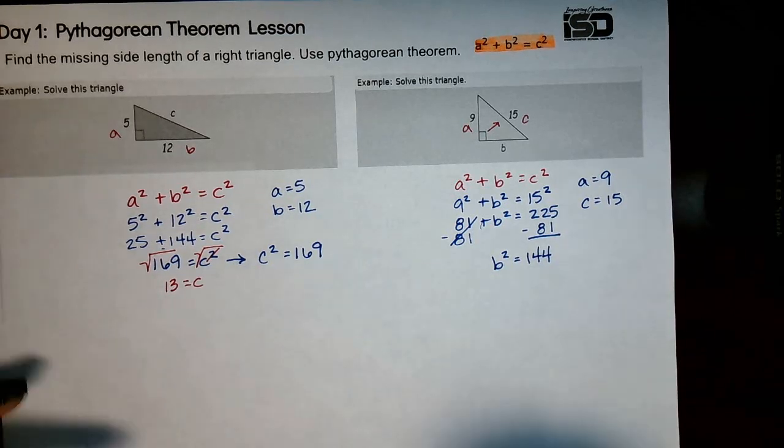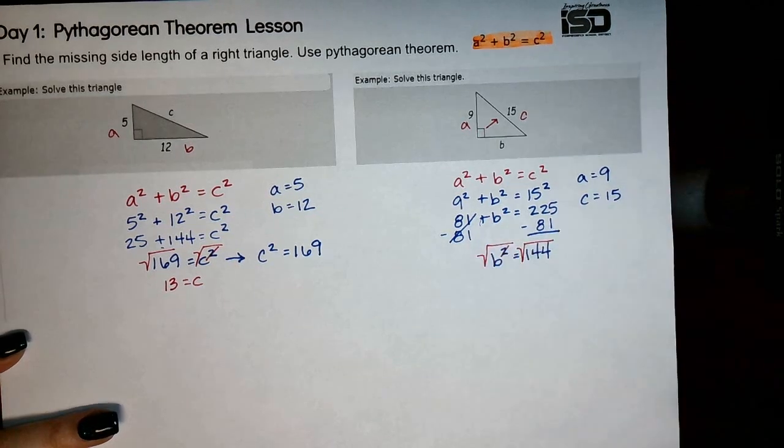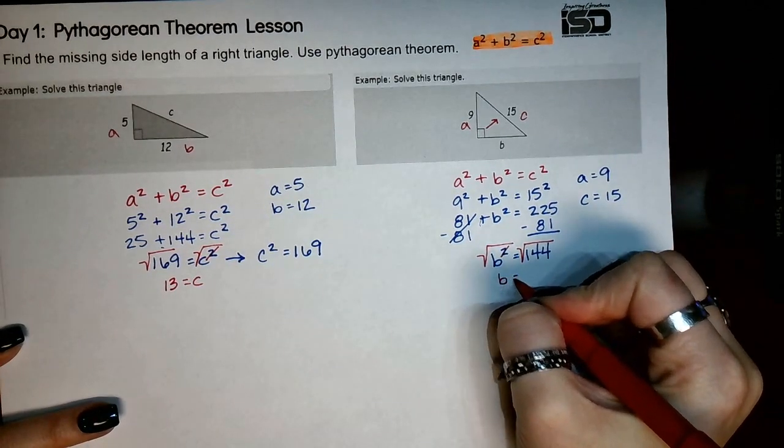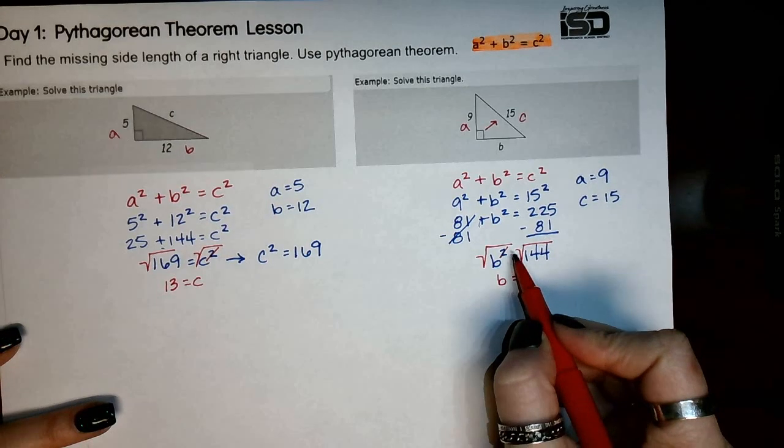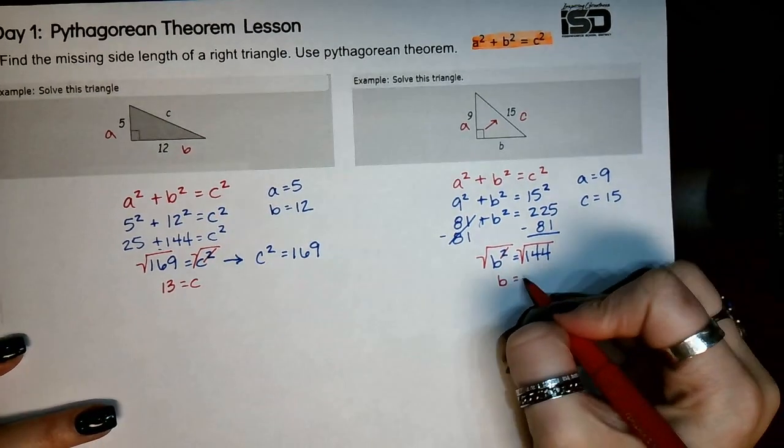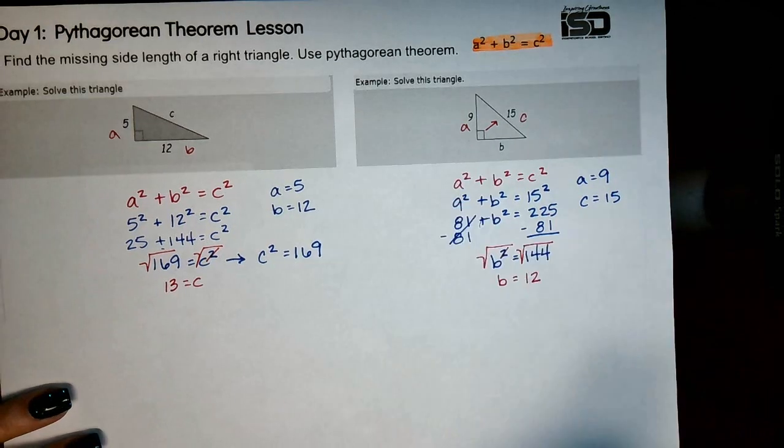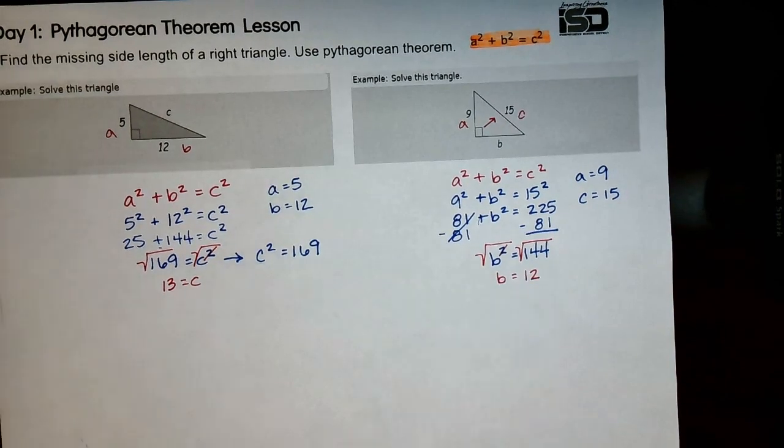Now from here, our last step is always to find that square root. That goes away, that cancels out, so I have b equals 12. And again, you're welcome to use calculators, the square root of 144 is 12. On this one, if you were asked what is your missing side length, I would say I'm missing a leg, and that leg b equals 12 units.